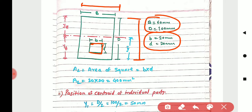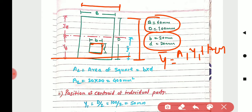First we have to find the position of the neutral axis. We determine y-bar from the bottom. The formula for y-bar is: (A1·y1 + A2·y2) / (A1 + A2). Remember, in this type of section the inner part is hollow, so the hollow area will be subtracted.